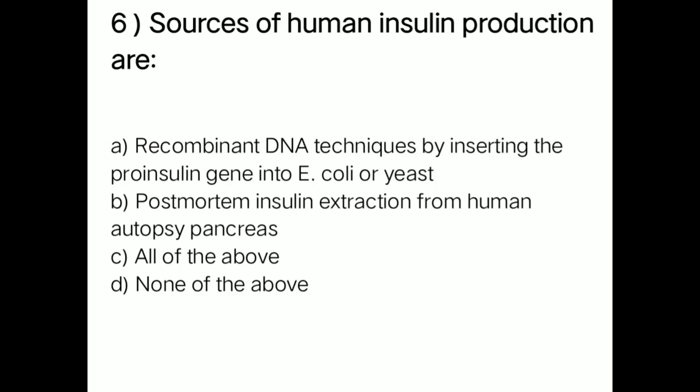Next question: sources of human insulin production are — option A: recombinant DNA techniques by inserting the proinsulin gene into E. coli or yeast; option B: post-mortem insulin extraction from human autopsy pancreas; option C: all of the above; option D: none of the above. Right answer is option A — recombinant DNA techniques by inserting the proinsulin gene into E. coli or yeast.